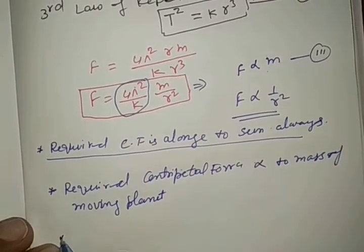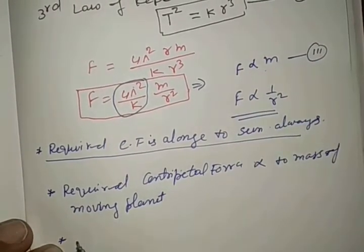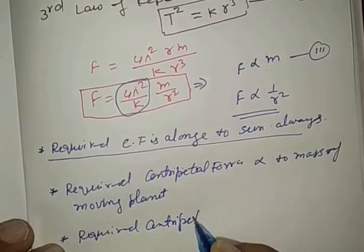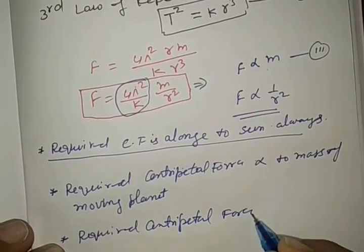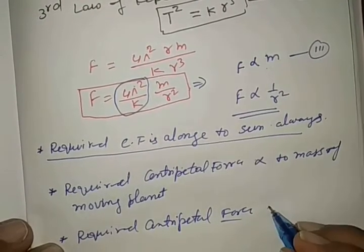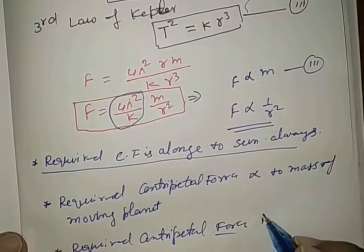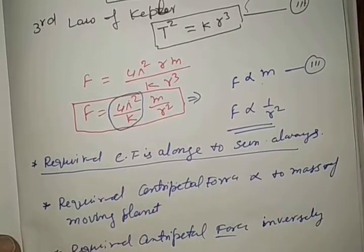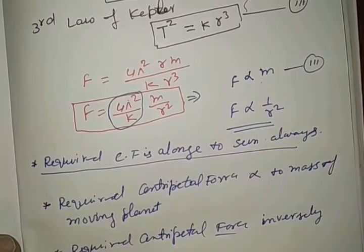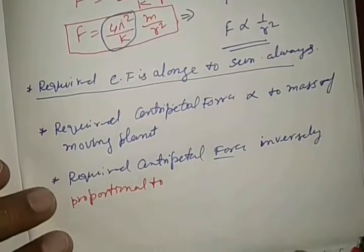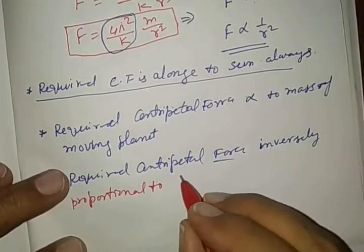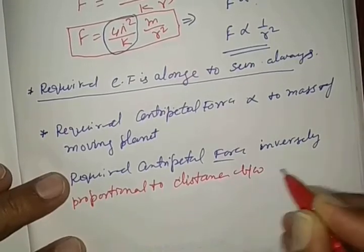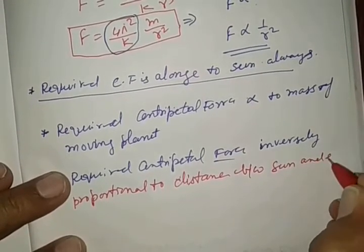required centripetal force is, see here, 1 by r square, it is called inversely proportional to, what is inversely proportional to? Distance between sun and earth.